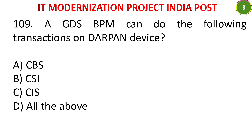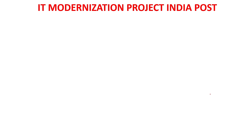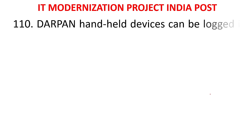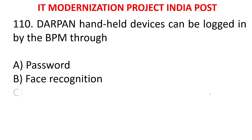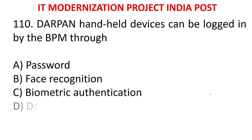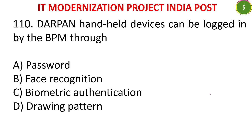MCQ 105: The GDS BPM can do the following transactions on DARPAN device - A) CBS, B) CSI, C) CIS, D) All of the above. MCQ 106: In DARPAN device, the BPM logs in through - A) Password, B) Face recognition, C) Biometric authentication, D) Drawing pattern. The answer is biometric authentication. DARPAN devices are logged in by the BPM based on thumb impression biometric authentication.